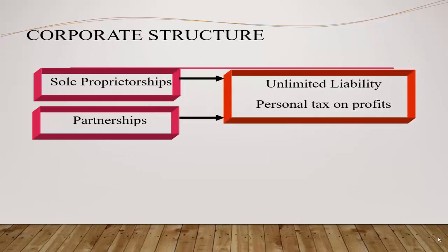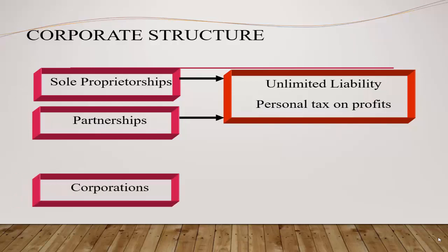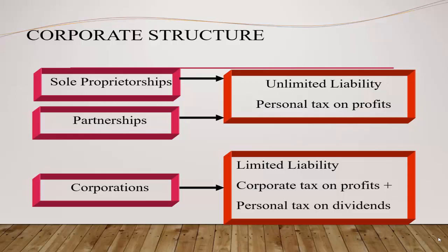Here is the corporate structure as a summary. For sole proprietorships and partnerships we have unlimited liability and personal tax on profits. For the corporation we have limited liability, corporate tax on profits, and personal tax on dividends.